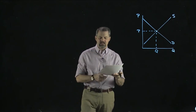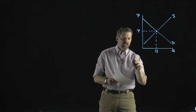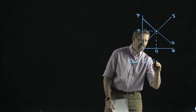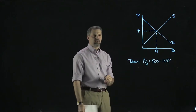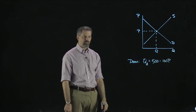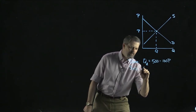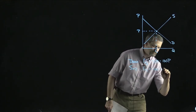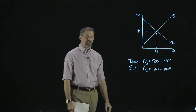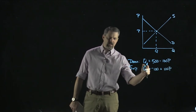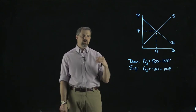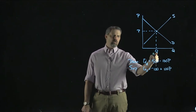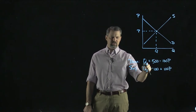Let's look at the actual demand and supply curves we're working with. Our demand curve looks like this: quantity demanded equals 500 minus 100P. Our supply curve: QS equals negative 100 plus 100P. In the previous video I didn't use the subscripts QD and QS — that's fine. When we set them equal to each other we drop the subscripts, because quantity demanded and quantity supplied are equal at equilibrium, so we just call it Q.